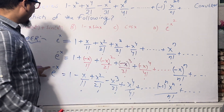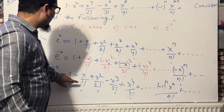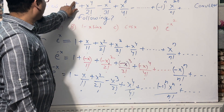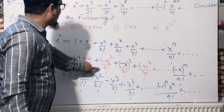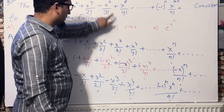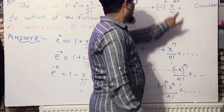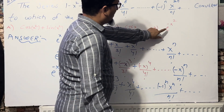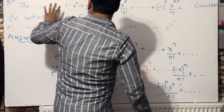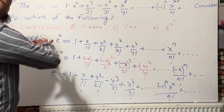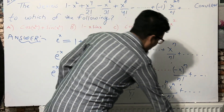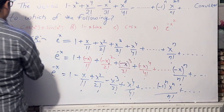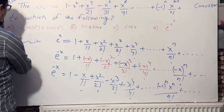Looking at the given series, we notice that all the x powers are doubled: where we have x, the given series has x squared; where we have x squared, it has x to the power 4; where we have x cubed, it has x to the power 6; and so on. So n becomes 2n. This matches answer D. I will now derive this properly.